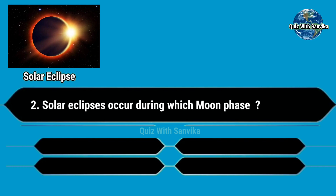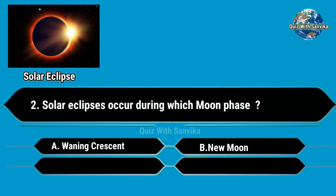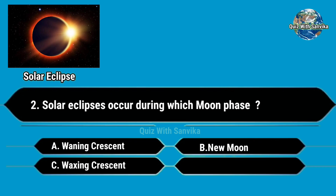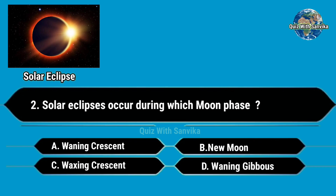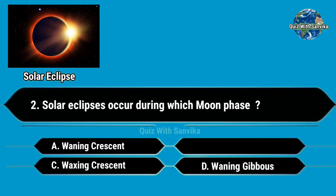Solar eclipses occur during which moon phase? Options are A. Waxing Crescent, B. New Moon, C. Waning Crescent, and D. Waning Gibbous. Answer is B. New Moon.